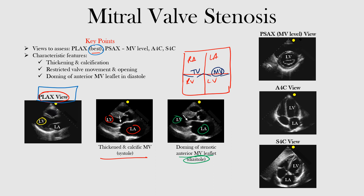In the parasternal short axis view, specifically at the mitral valve level, you have the left ventricle and then the mitral valve itself. You're looking at the surrounding outline of it — you may have heard it described as a fish mouth appearance. That is the mitral valve we're focusing on in this view.